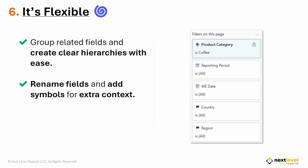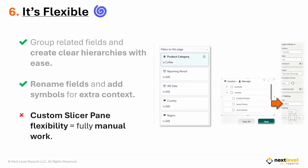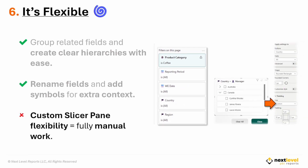Reason number six: the filter pane is flexible. You can group related fields to create clear hierarchies, rename those fields to match user terminology, add emojis or symbols to provide extra context, control the width, hide or show filters, and lock in default filters on any page. The filter pane gives you a lot of built-in flexibility with very little effort. A custom slicer pane can also be flexible, but every bit of that flexibility must be carefully designed, crafted, and then maintained manually.